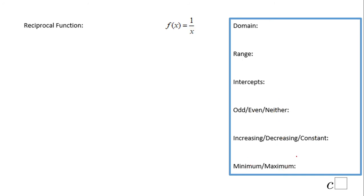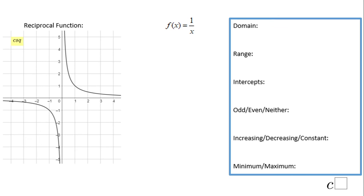The last function is the reciprocal function f(x) = 1/x. This one is a little different — we have two parts and this function is discontinuous, unlike the others. For the domain, we can use any x value except zero, since there is a vertical asymptote there. The domain is anything but zero, written in interval notation as negative infinity to 0 union 0 to infinity.